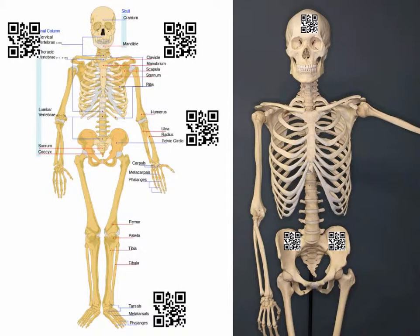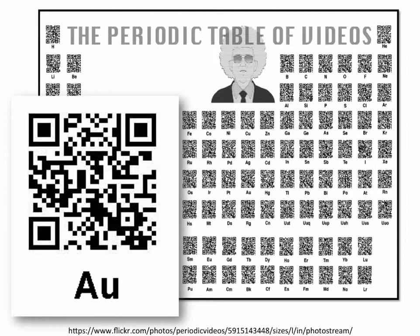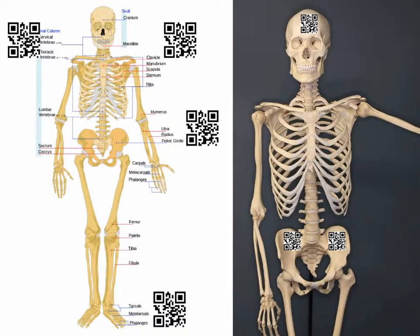Using QR codes as supplemental information is kind of the underlying theme across all of these ideas. It's nice to have a skeleton with all of the names of the bones, but space is going to limit the information that can actually be shared on a worksheet. A teacher can add QR codes onto worksheets for supplemental information. QR codes can also be very small — stamp size — so if you have classroom models or objects, you can put QR codes around the room without them taking up a ton of space.